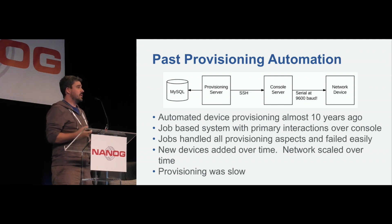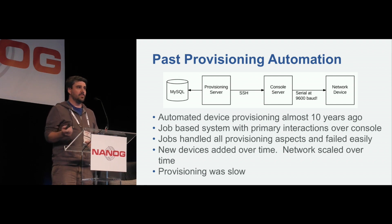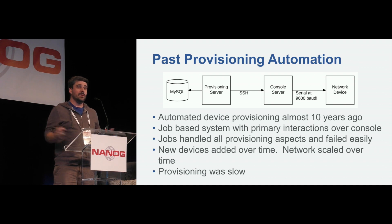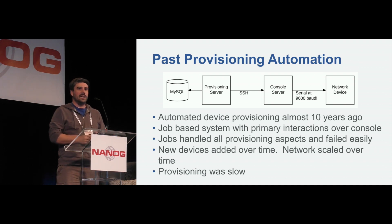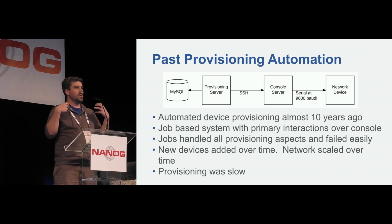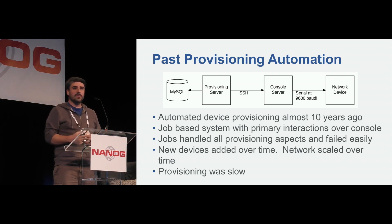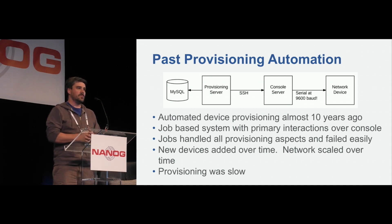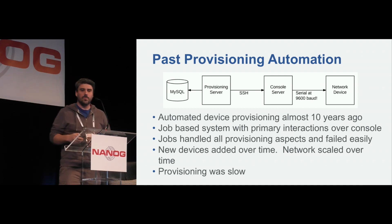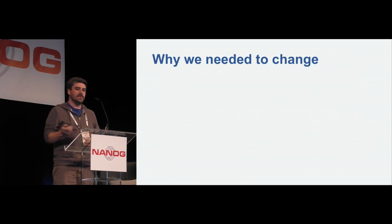The system was also very slow — pasting a configuration over 9600 baud was extremely slow, and everything was done serially. We also did LLDP discovery during the process, running 'show LLDP neighbors' to try to figure out what the device was. So we needed to solve this.